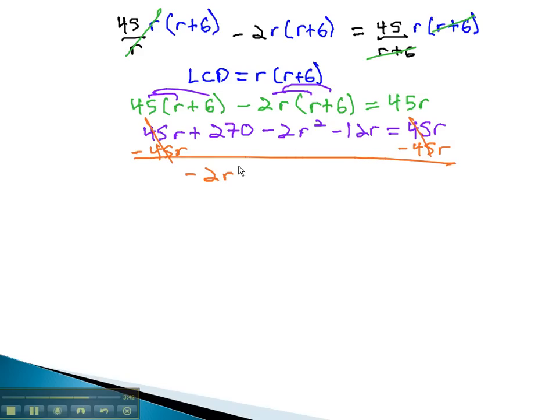We now have negative 2r squared, minus 12r, plus 270, equals 0.